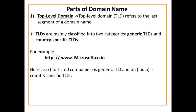Top level domain refers to the last segment of the domain name — यह domain name का last part होता है, जैसे .com, .gov, .net. Top level domains are mainly classified into two categories: generic TLDs and country-specific TLDs.